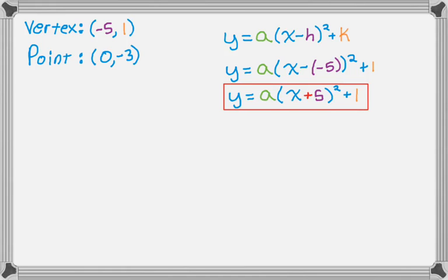In the next step, we use the ordered pair that we were given that's on the curve. So 0, negative 3. 0 is always a good coordinate if you have it, because it makes things simpler. So negative 3 equals a, the quantity 0 plus 5 squared plus 1.